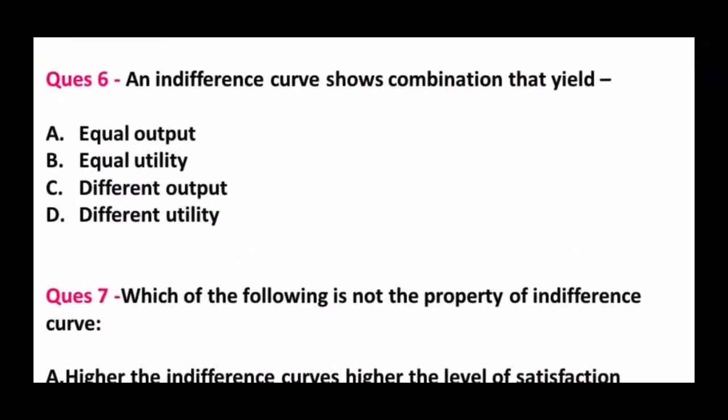Question number 6: An IC shows combination that yield equal output, equal utility, different output, or different utility? The answer is B, equal utility.